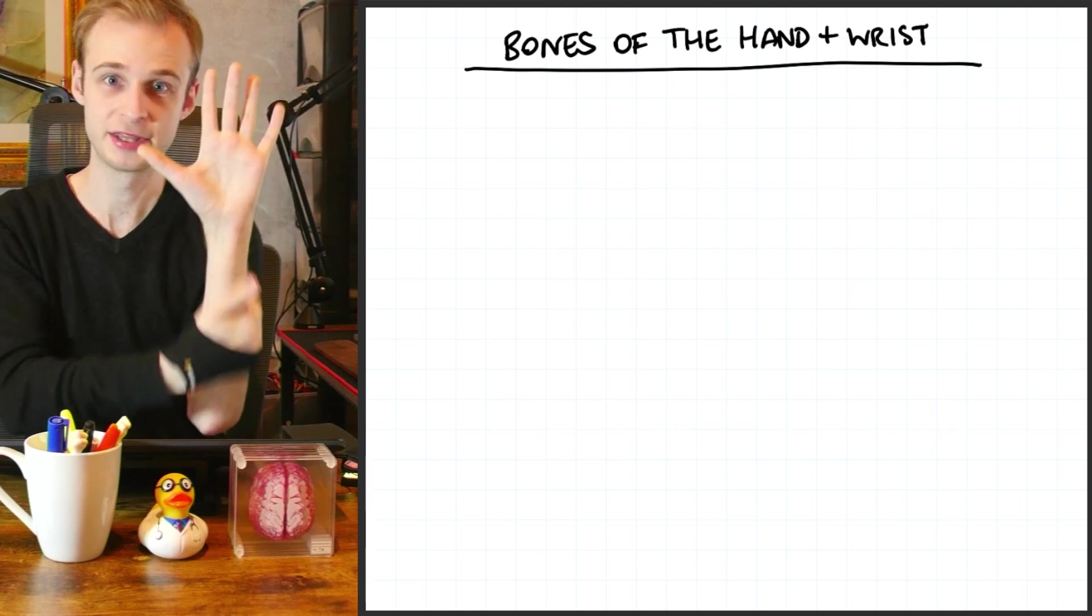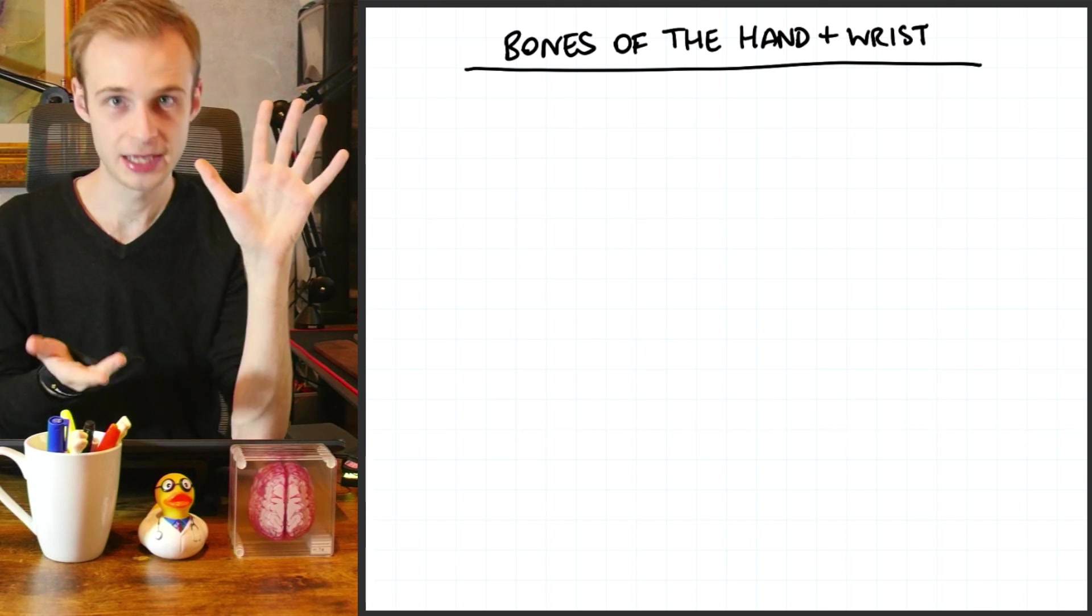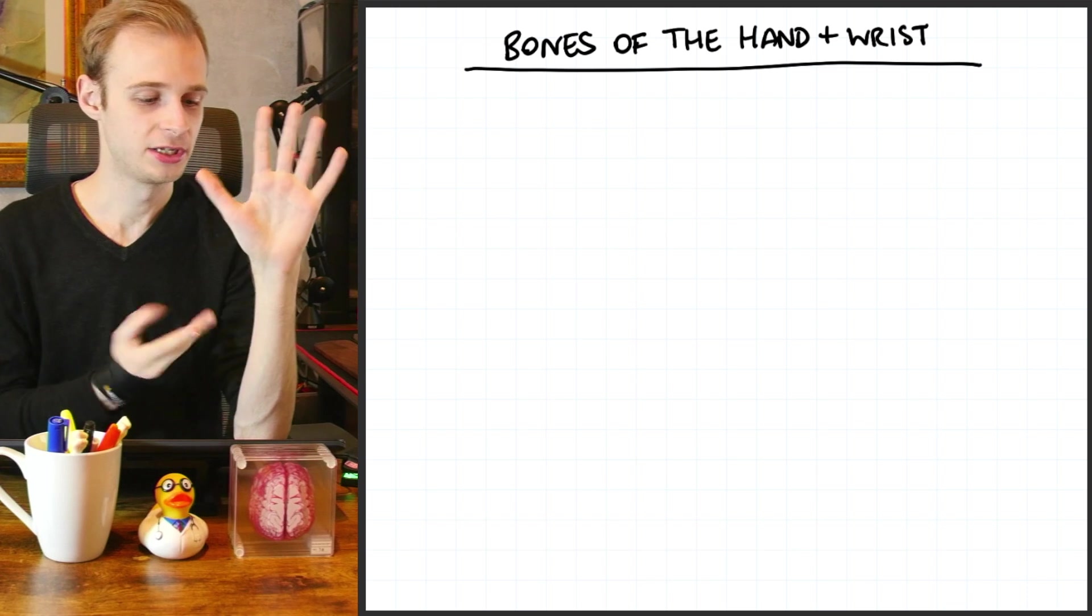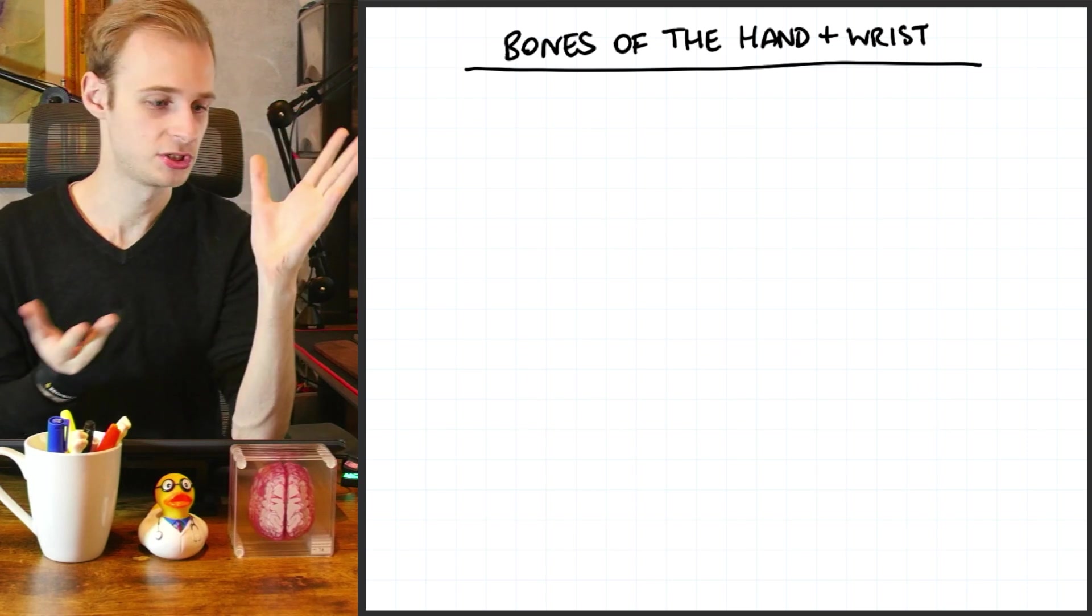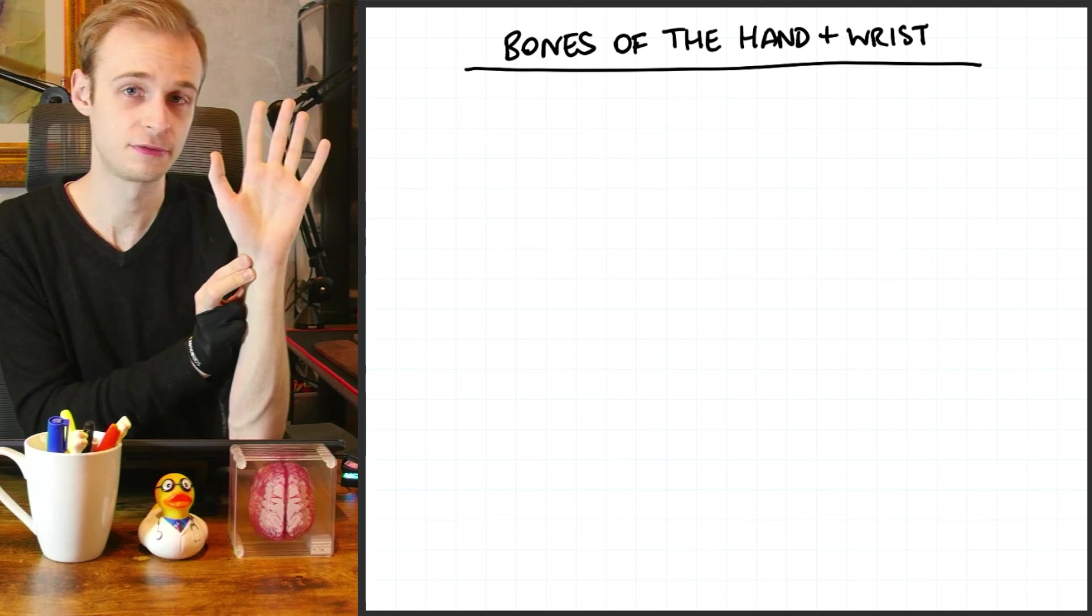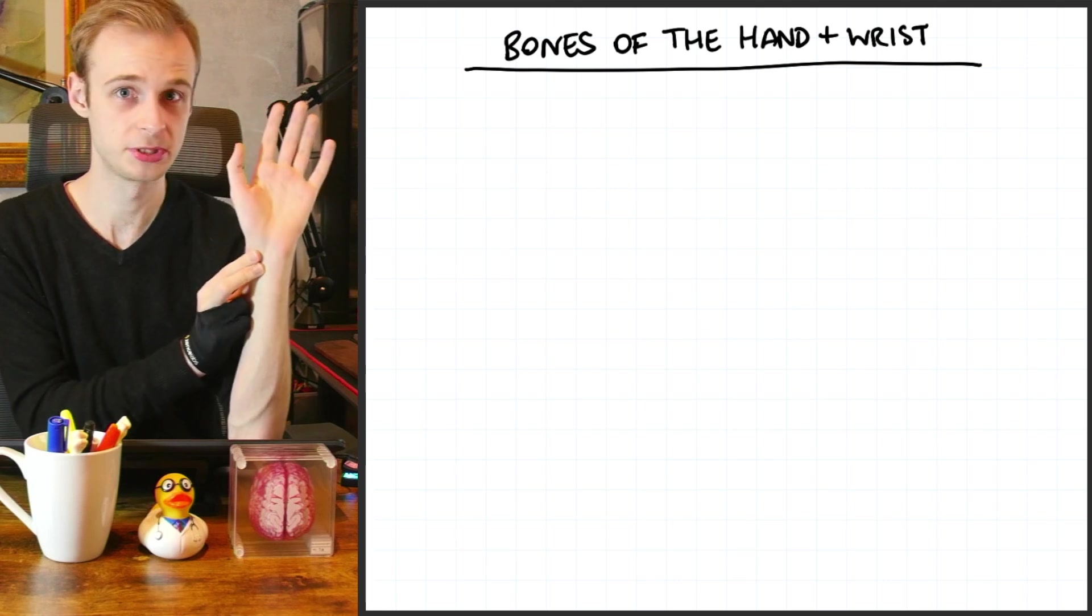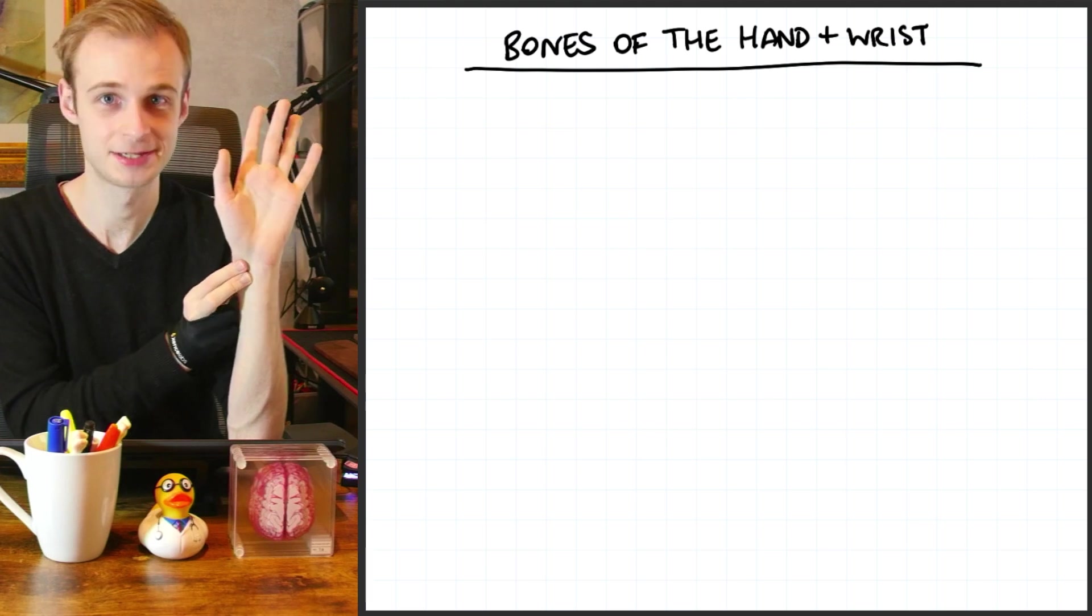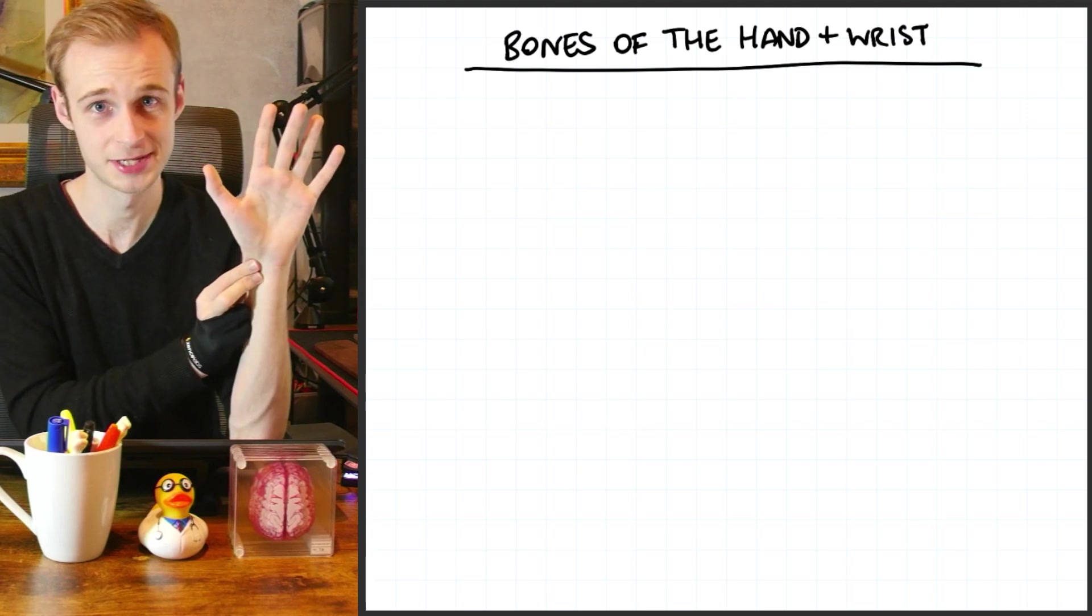We actually call these the radial and the ulnar aspects of the arm because of the bones on each side. An easy way to remember which is which is you think when you feel for your pulse you're feeling for your radial pulse or the pulsating radial artery and it's called that because it's on the radial side.